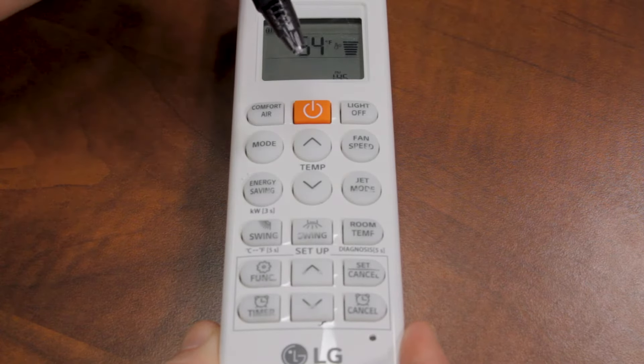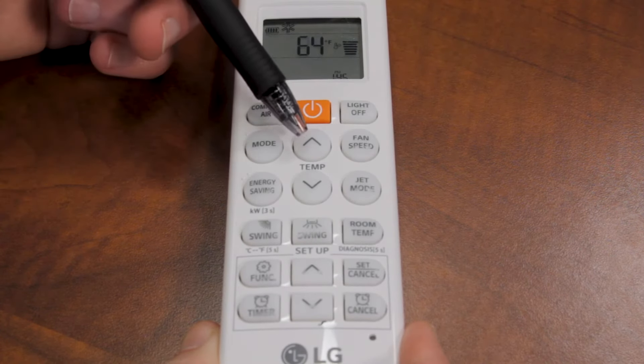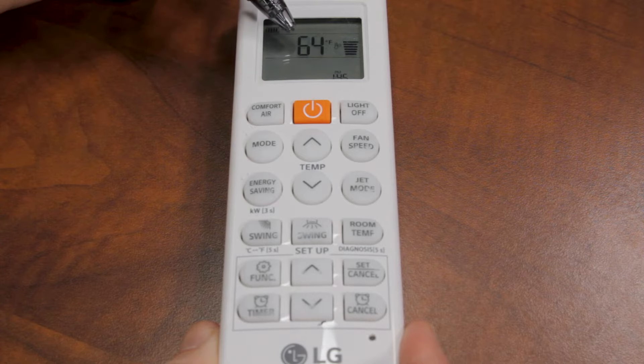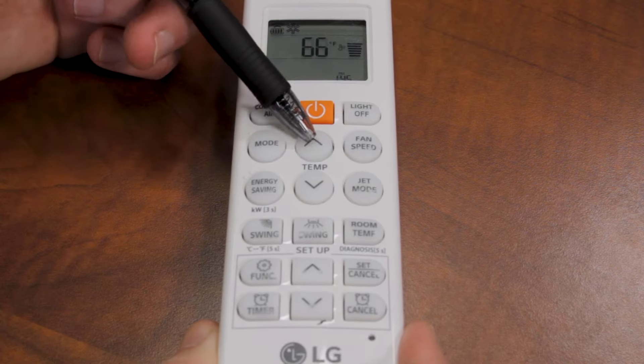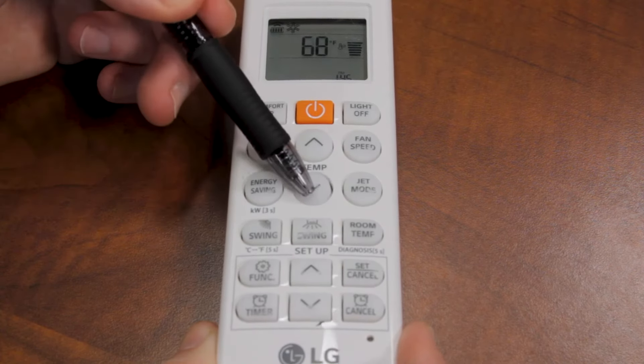To adjust the temperature up and down, you press this. This is going to be the temperature that you're trying to achieve. If that's too cold, you turn it up. Too hot, you turn it down.